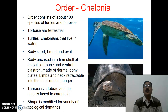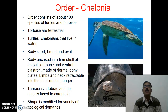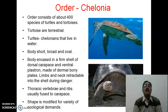They have a short, broad, and oval body. The body is encased in a firm shell consisting of a dorsal carapace and a ventral plastron made of dermal bony plates. The limbs and neck are retractable into the shell during danger.